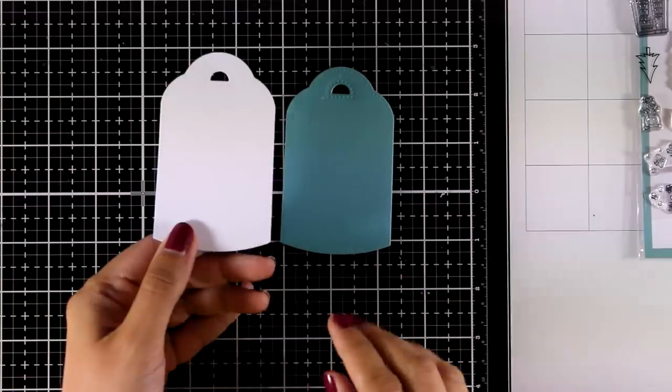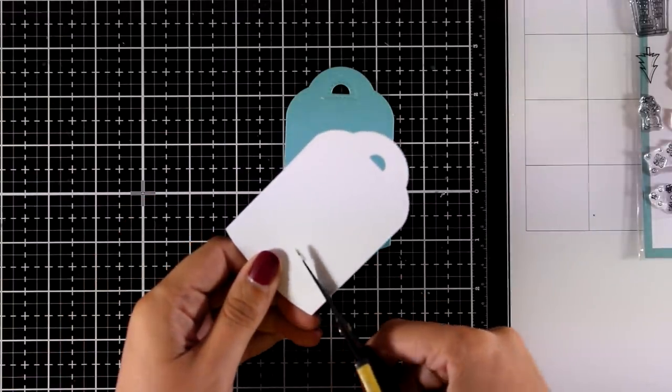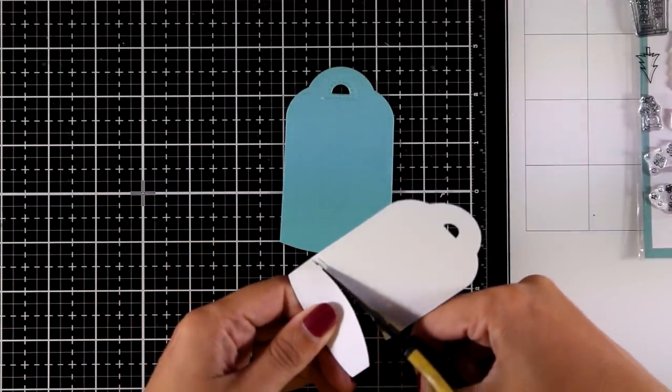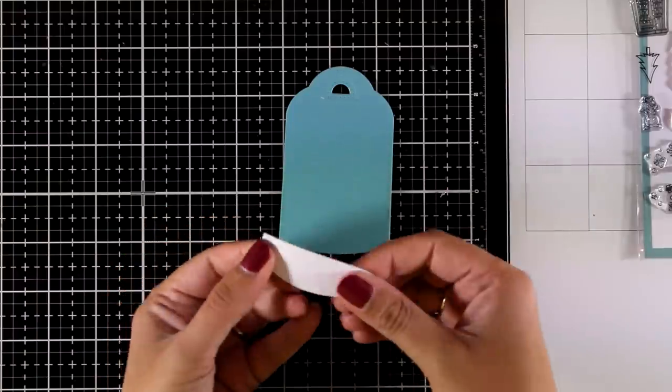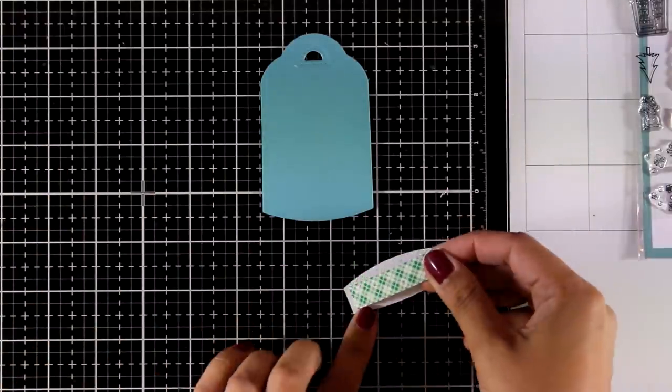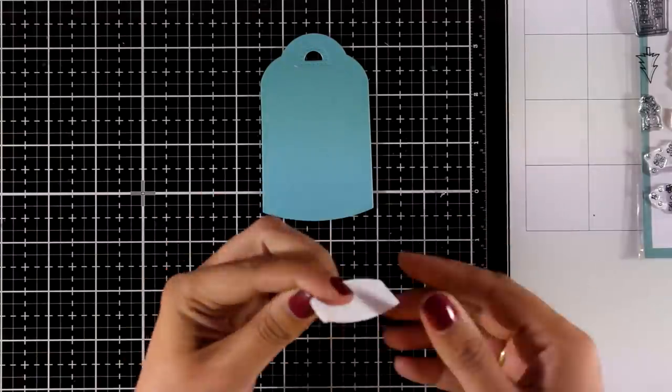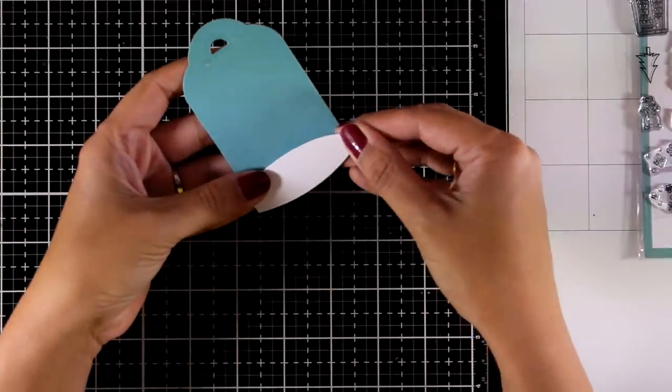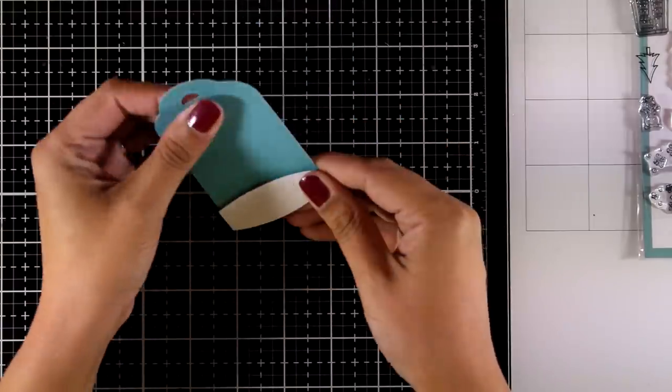Now I die cut the tag twice and I'm going to chop off this white part here which is going to be a snowbank, but at the same time I ended up having a lovely stitching since the die has a stitching all around. Now I'm going to stick this at the very bottom of my tag and it's going to turn into a snowbank.